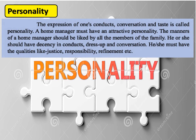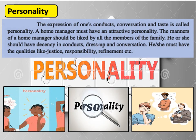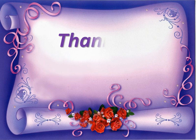The ninth quality is personality. The expression of one's conduct, conversation, and taste is called personality. A home manager must have an attractive personality. The manners of a home manager should be liked by all family members. He or she should have decency in conduct, dress, and conversation, and must have qualities like justice, responsibility, and refinement. With the integration of all these qualities, a home manager can have an excellent personality, and the person who possesses such personality gets obedience and cooperation from others, becoming successful in any kind of management.